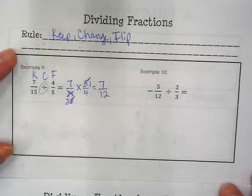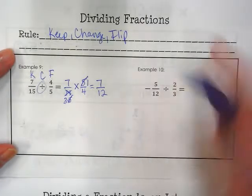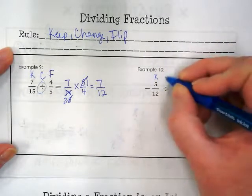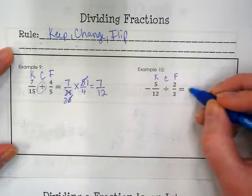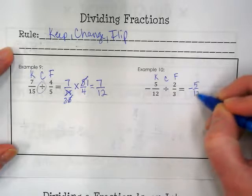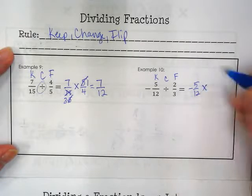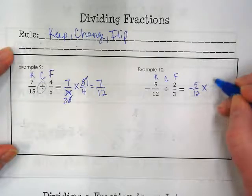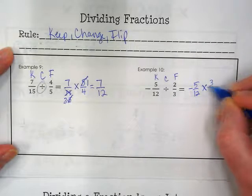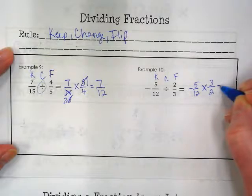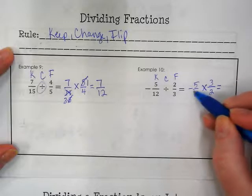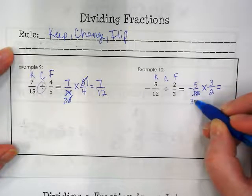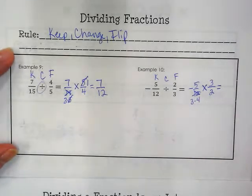Okay, let's keep that in mind for Keep, Change, Flip over here. Remember Keep, Change, Flip. We're going to end up with negative 5/12 because we keep that. We change division to multiplication, and we flip 2 over 3 into 3 over 2. We're going to multiply, but before we do, let's see if we can reduce anything. I see 12 can be reduced to 3 times 4 if I'm looking at its factors, which means I can get rid of the 3.